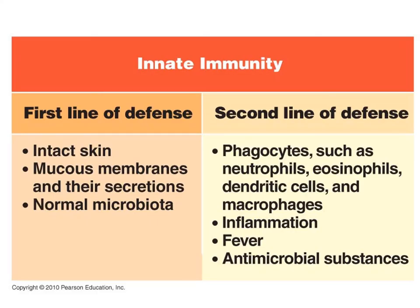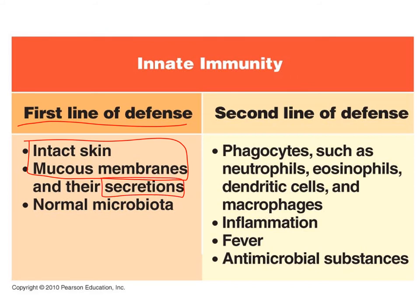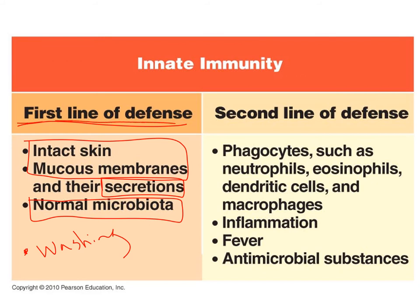So to summarize your first line of defense: it is meant to prevent infection. This includes the tissue barriers — skin and mucous membranes — chemical factors your body secretes, your normal microbiota performing microbial antagonism, and washing processes. If microbes get past your first line of defense, then it is up to your second line of defense to combat the infection.